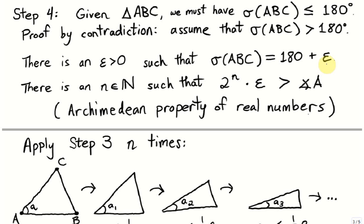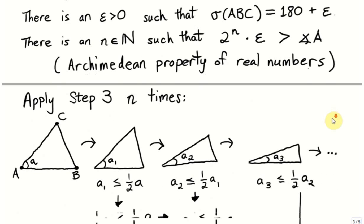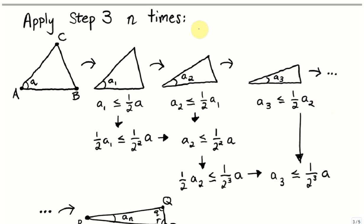Epsilon represents the excess over 180 degrees. We need the Archimedean property of real numbers, which states that for any small number, there exists a constant such that their product exceeds any fixed value. Since angle A is fixed and epsilon is our small number, there exists a power of 2 — call it N — such that 2 to the N times epsilon is greater than angle A. We then apply step 3 a total of N times, producing N new triangles from triangle ABC.